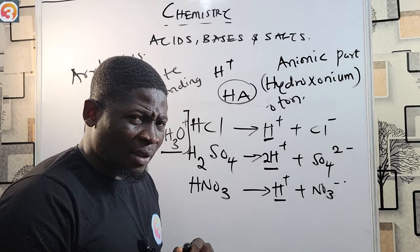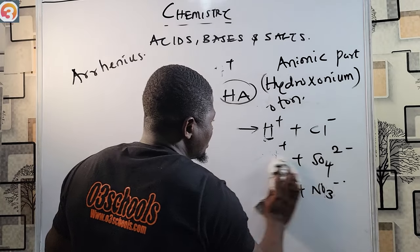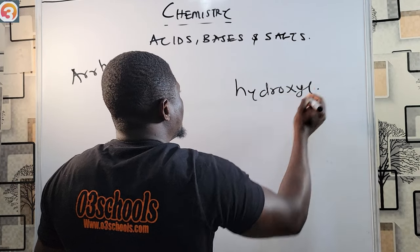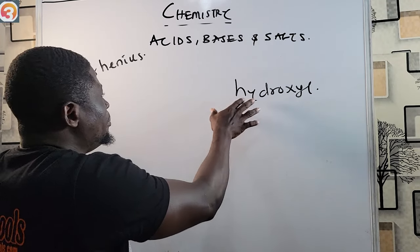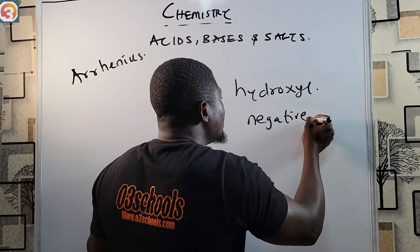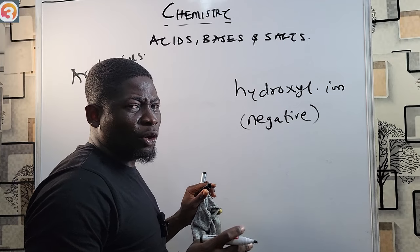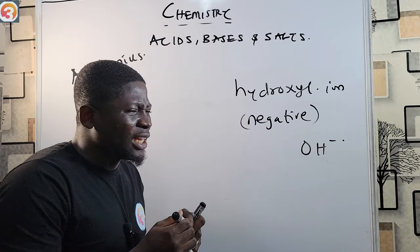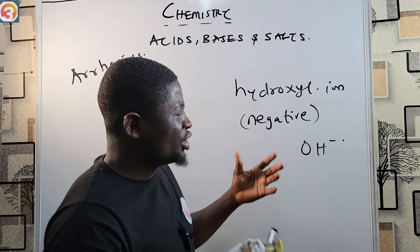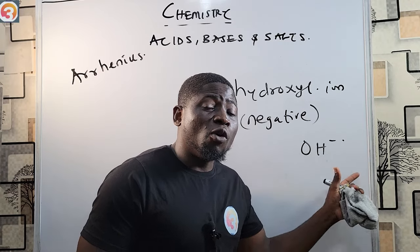Now let's look at Arrhenius bases. Arrhenius defined a base as a substance that produces hydroxyl ion (OH⁻) as the only negative ion when dissolved in water. This means that bases usually have OH in their formula, making them easy to identify.